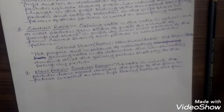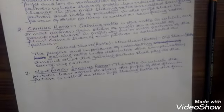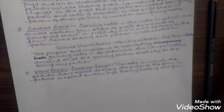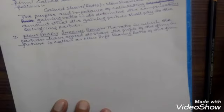The purpose and importance of calculating gaining ratio is to determine the compensatory amount that the gaining partner shall pay to the sacrificing partner. The main purpose of calculating this ratio is to know how much the gaining partner is going to pay to the sacrificing partner. The ratio in which partners have agreed to share the profits of the firm in future is called the new profit sharing ratio.